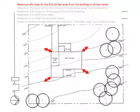To begin with, the first standard says a maximum of 6% slope for the first 10 feet away from the building on all lawn areas. So this area out here is all lawn. And you know that for the first 10 feet away from the building, you can have no more than a 6% slope.